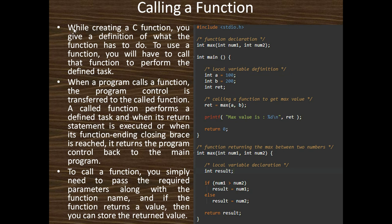While creating a function, you give a definition of what the function has to do. To use a function, you will have to call that function to perform a different task. We call the function with the statement that calls the function to get the max value. When a program calls a function, the program control is transferred to the called function. When ret equals max(a, b), it executes the body of the function. When the return statement is executed or when the closing brace of the function is reached, it returns program control back to the main program.